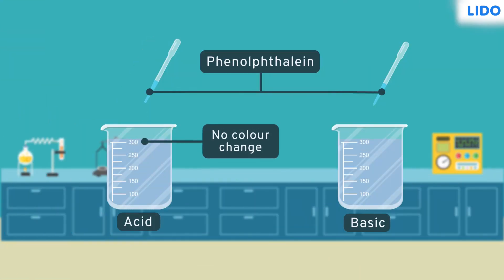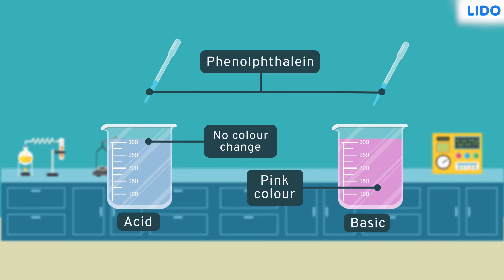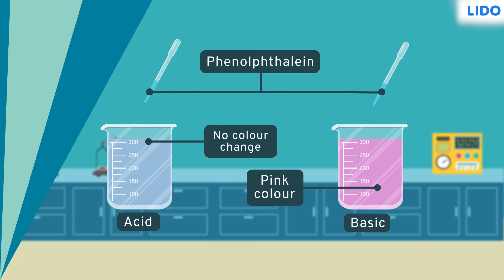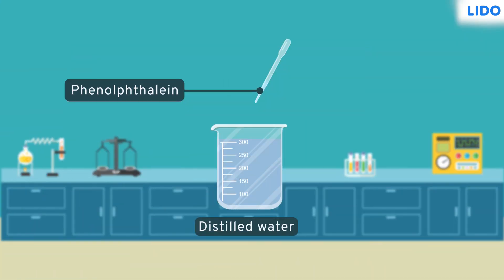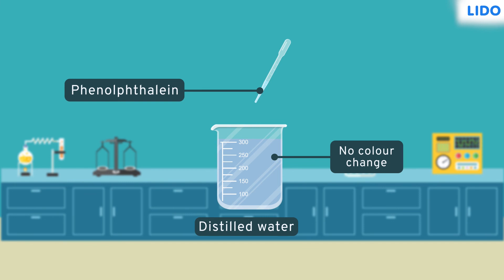Other indicators used in labs are phenolphthalein and methyl orange. Phenolphthalein doesn't show any color change for acidic substances whereas it turns pink for basic substances. But what about neutral substances such as distilled water? Will the indicators show any change? Well, it turns out that indicators do not respond to neutral substances.